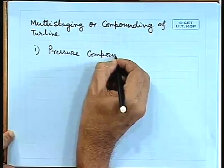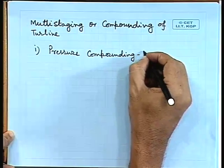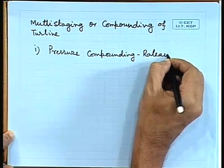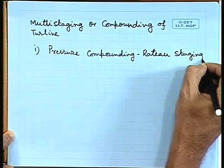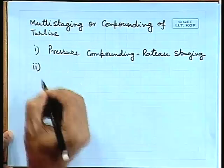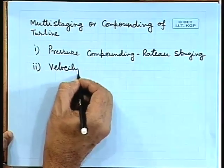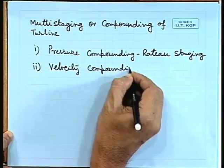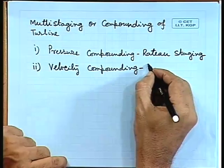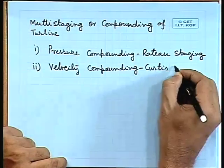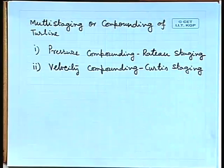For multi-staging of an impulse turbine, if it is a pure impulse turbine, there are two options for compounding. One is pressure compounding — also called Rateau staging after the name of its inventor — and the other is velocity compounding.